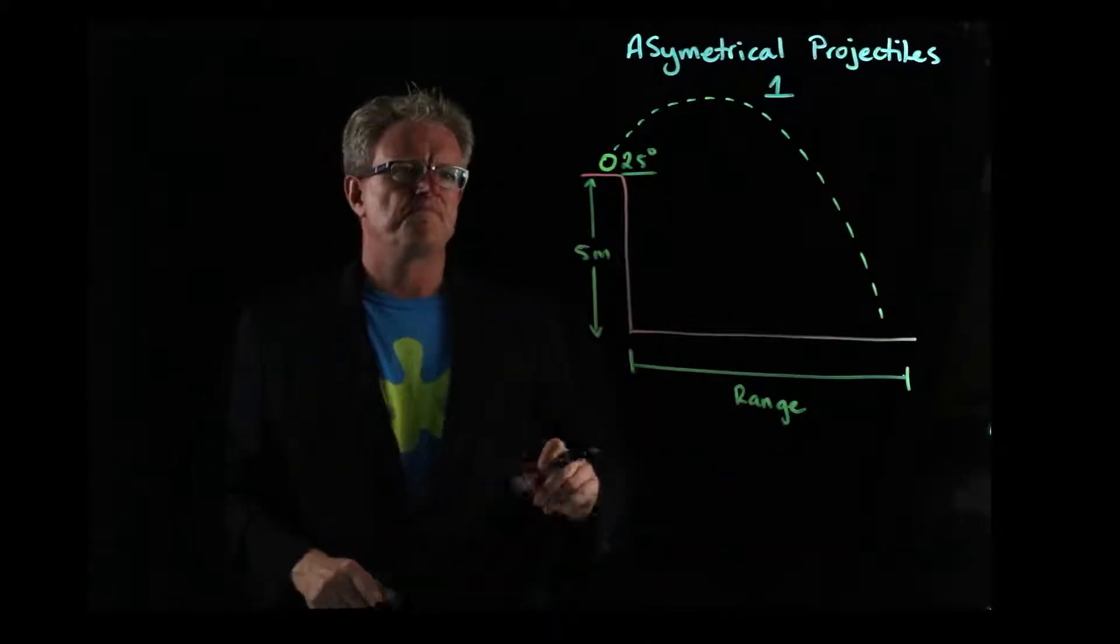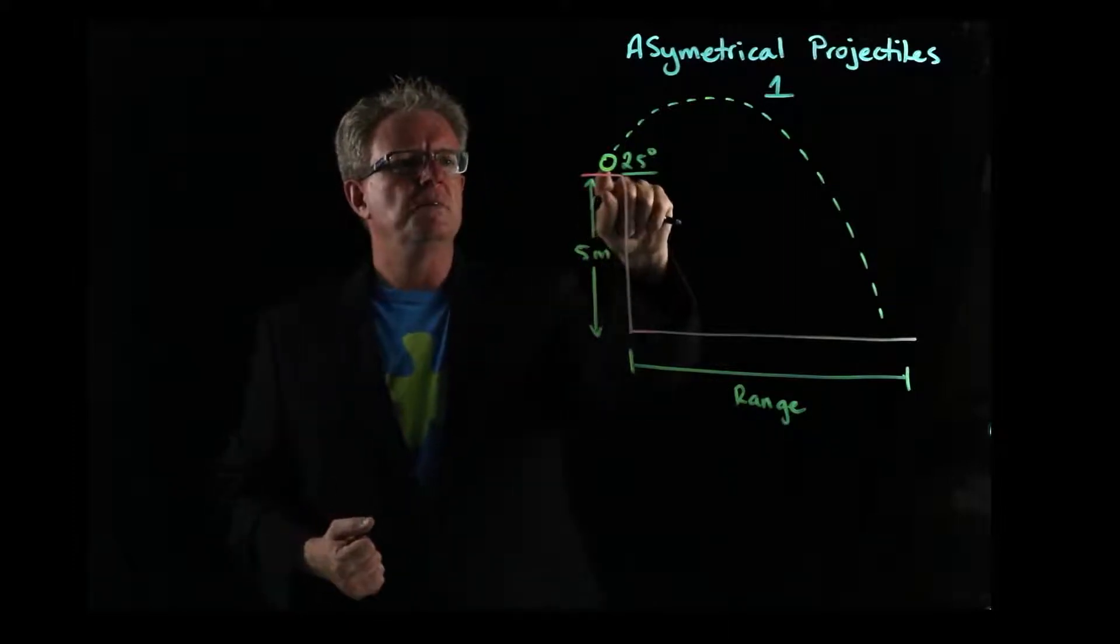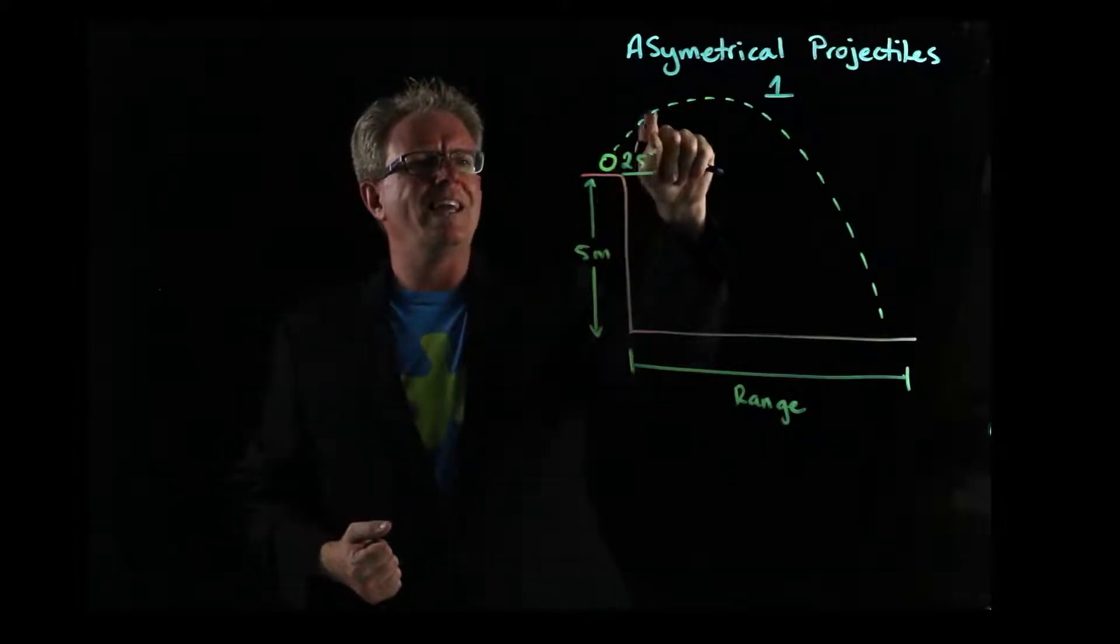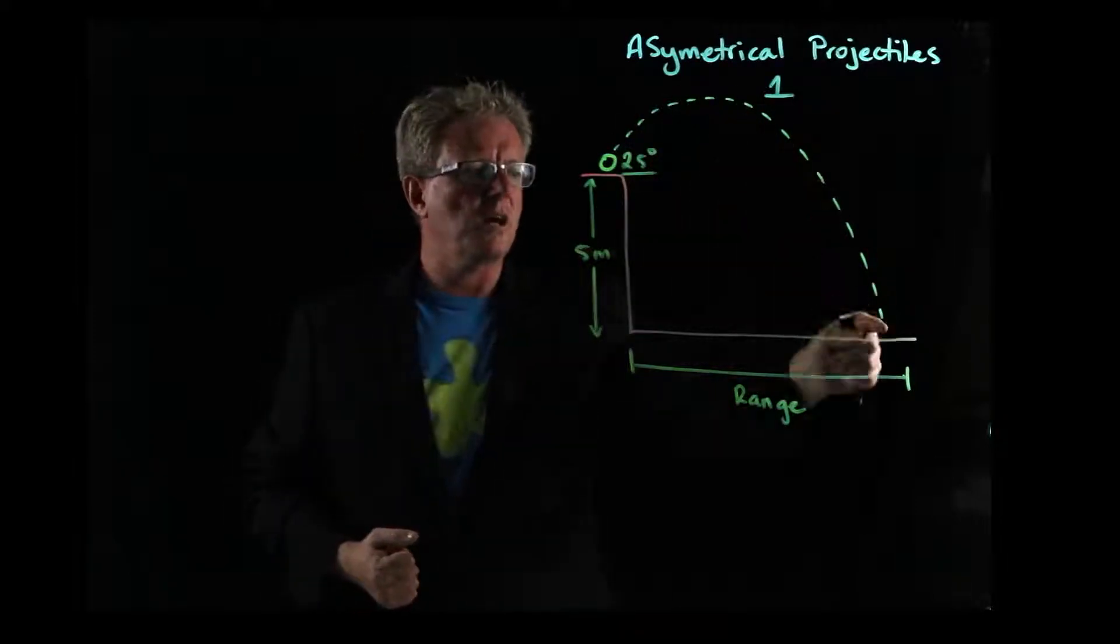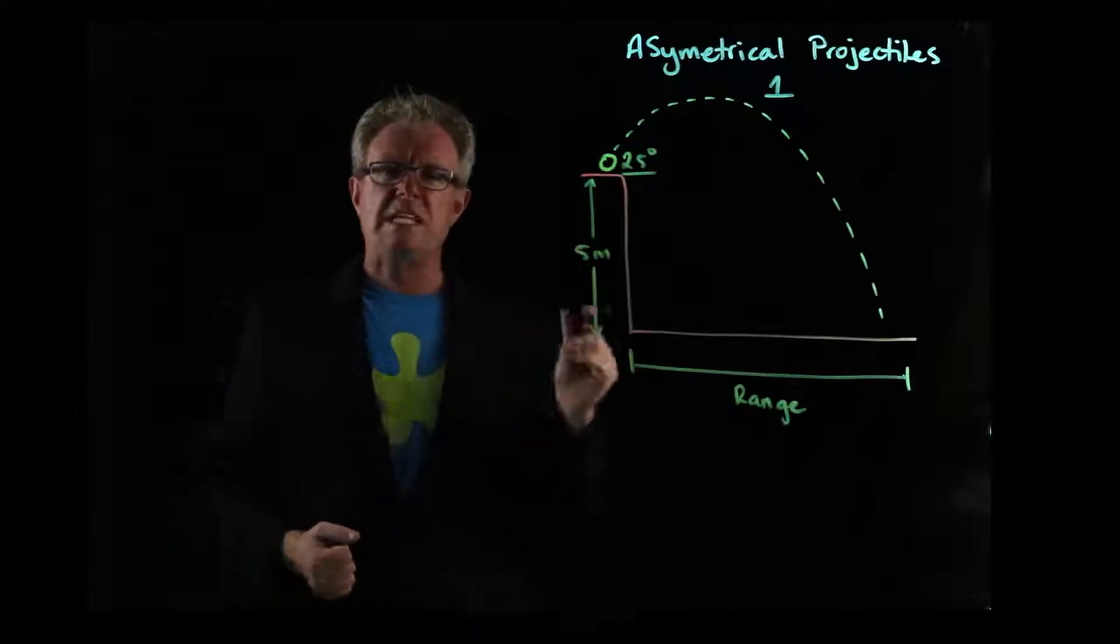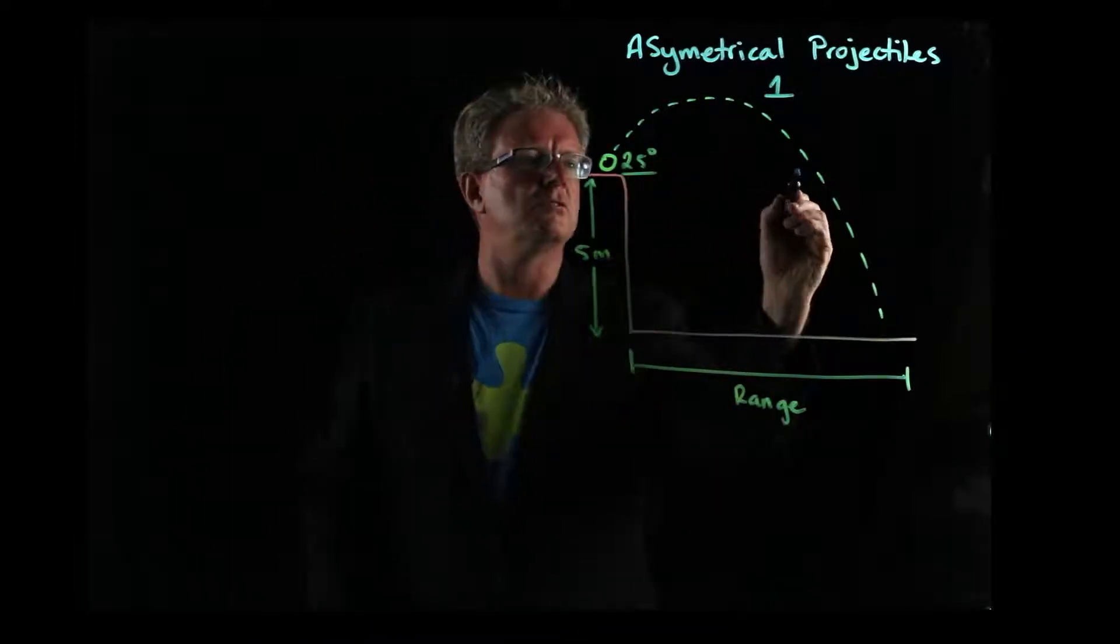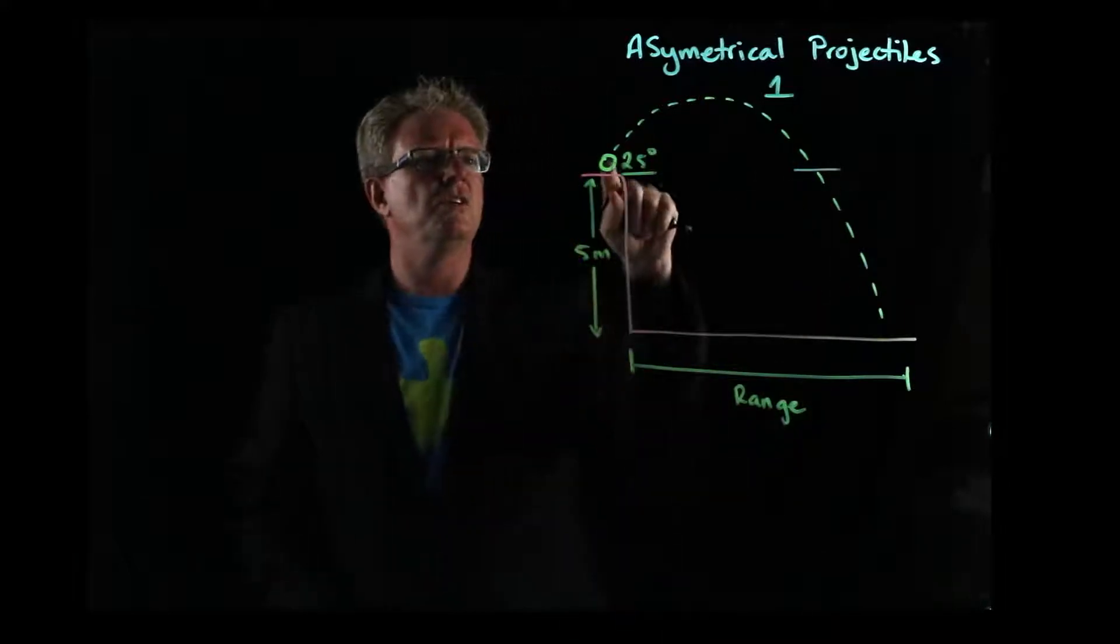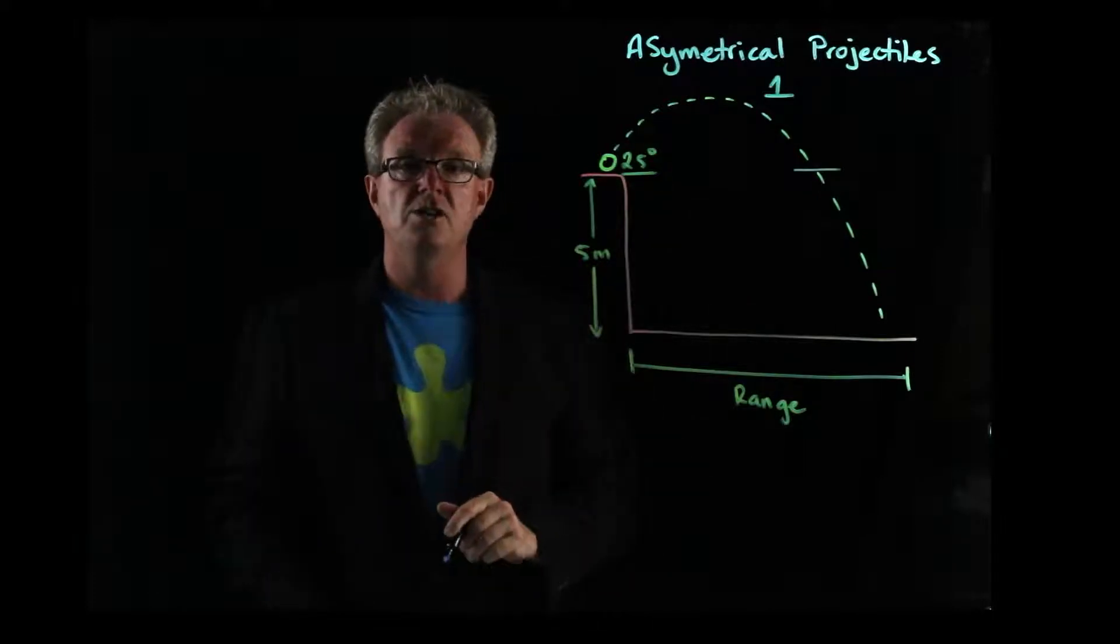So what happens if we have this? We've got a ball or a cannonball or whatever it might be, projected at an angle 25 degrees from the horizontal upwards, and then it goes down. Now, remember the key concepts we've looked at so far with parabolic trajectories and motion is that we only considered this part of the journey, starting and finishing at the same location.